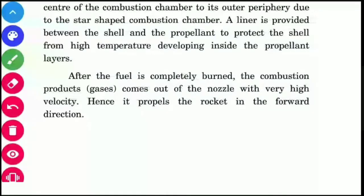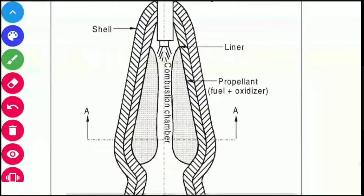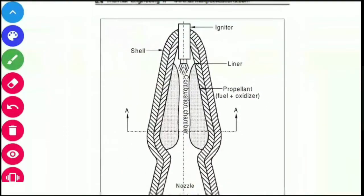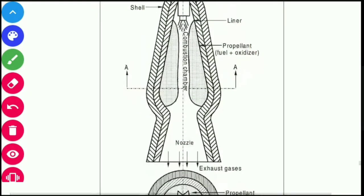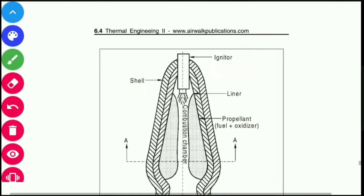If the gas exits in the opposite direction, the reaction drives the rocket upward. The figure shows the components: igniter, shell, liner, fuel plus oxidizer as the solid propellant. The combustion chamber leads into the nozzle, and the gas exits through the nozzle, propelling the rocket in the forward direction.